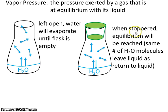So when stoppered, equilibrium will be reached. Equilibrium is when the same number of water molecules leave the liquid as returned to the liquid. So this liquid and this vapor are at equilibrium with one another. So evaporation and condensation are happening at the same rate.